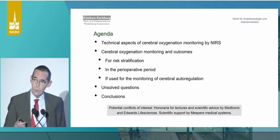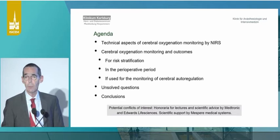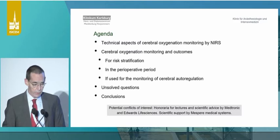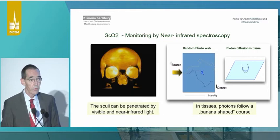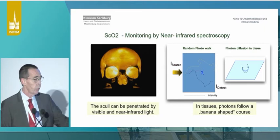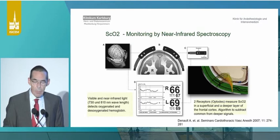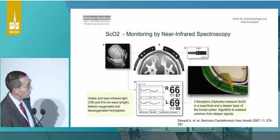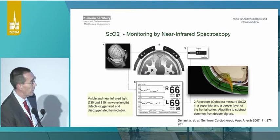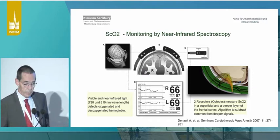It's not that simple, as already brought up in the first talk. I'd like to start with some technical aspects and then present how we can use this technology, and discuss the unsolved questions. We can use it because the skull can be penetrated by light, and photons follow a banana-shaped path within tissues. If you enter some light by light-emitting diode and use two sensors a little bit apart from each other, you can get information about the oxygenation state in the more superficial or the deeper parts of the brain. By subtracting one piece of information from the other, you get information about tissue oxygenation in the vessels in that specific area.